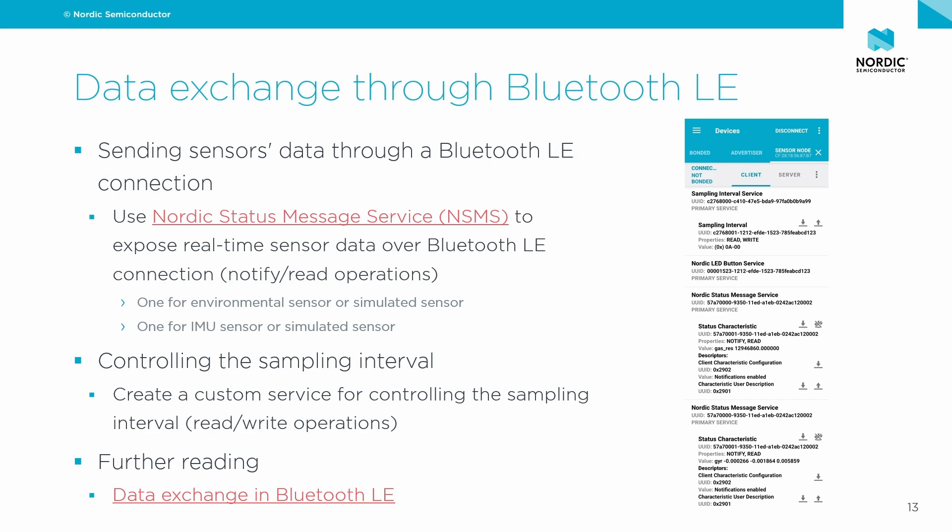From the perspective of a firmware developer, data is exchanged in Bluetooth Low Energy through what's known as GATT services and characteristics. The development kit will act as a GATT server and the mobile phone will act as a GATT client. We'll use a GATT service in the nRF Connect SDK called NSMS — Nordic Status Message Service — to expose the current, or real-time, sensor readings. The mobile phone can subscribe to periodic notifications and also read these values anytime.